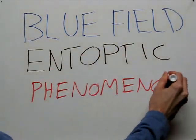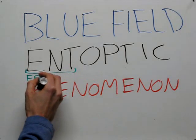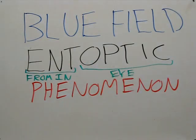Blue field because it's blue light, blue light field, and entoptic because it comes from within your eye. It's something that you're seeing which is caused by the internal structure of your eye. Same thing as the last video.